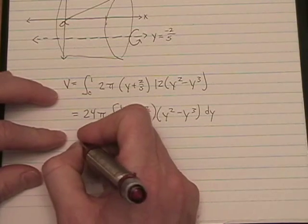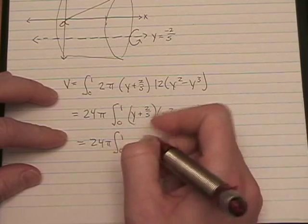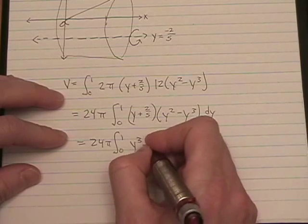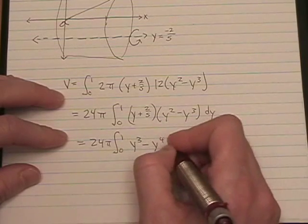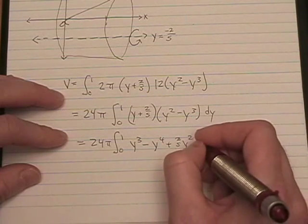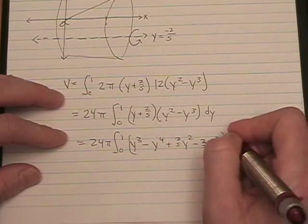So, let's do that real quick. 24 pi, integral from 0 to 1, y cubed minus y to the 4th plus 2 fifths y squared minus 2 fifths y cubed dy.